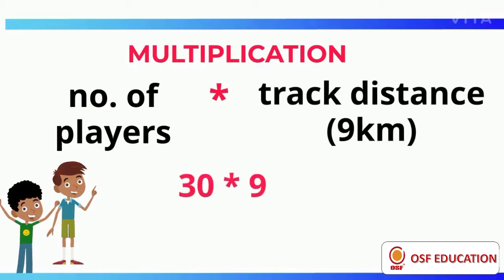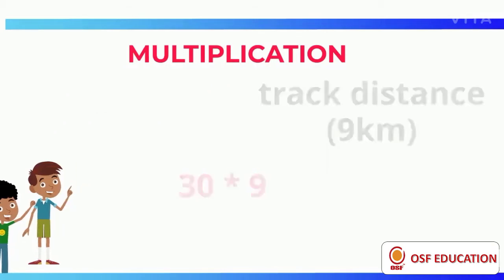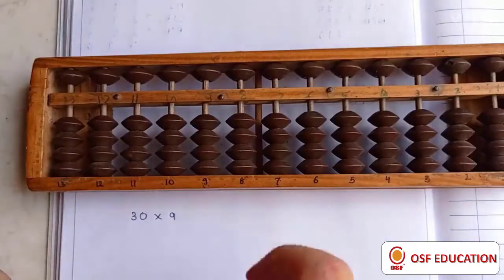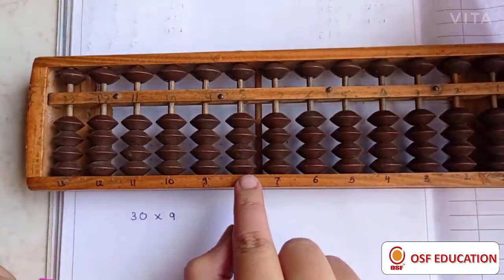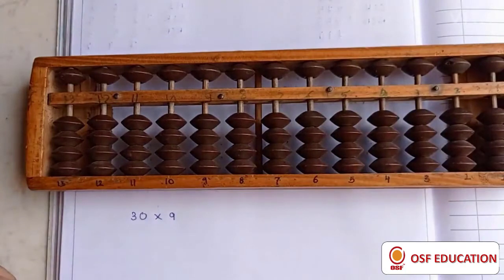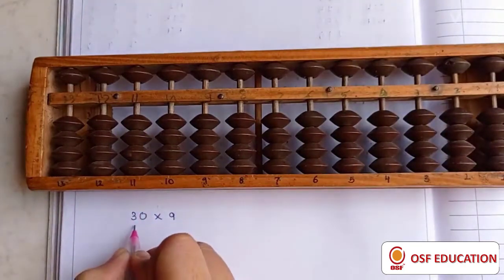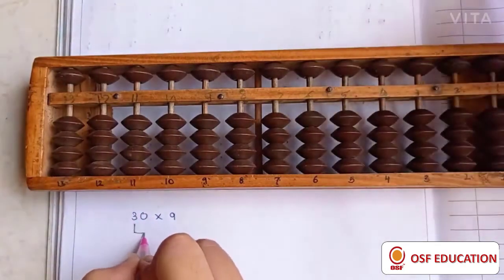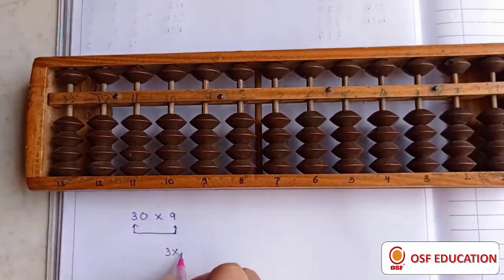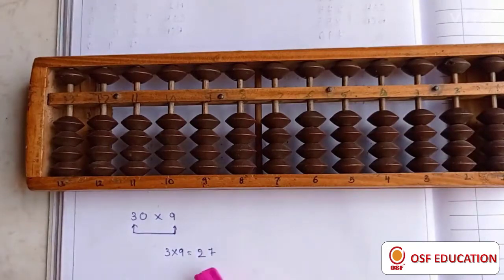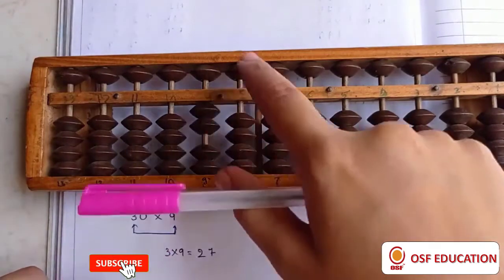So we get our answer. Now solving this using our abacus. To solve this, we are using these 3 beads, that is 1s, 10s and 100s for multiplication and divisions. So now multiplying 3 with 9 will give us 27. So now placing this number from 100s to 10s, that is 27.